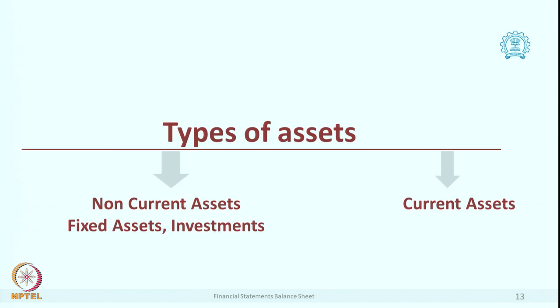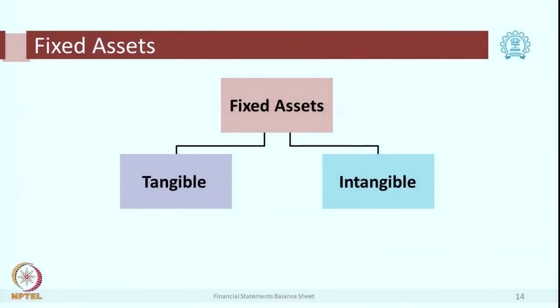There are 2 major types of assets: non-current and current. Within non-current, you have fixed assets and investments. What do you mean by fixed assets? This is an infrastructure or a property which is going to last for more than 1 year — it acts as a catalyst in our operations. There are 2 types: tangible fixed assets and intangible fixed assets. Tangible examples are land, building, plant, machinery — a variety of things which have a longer life.